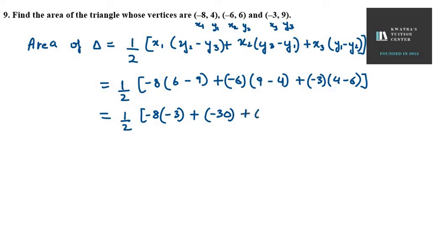So you get half times [24 - 30 + 6]. 24 minus 30 is -6, and -6 plus 6 is 0.